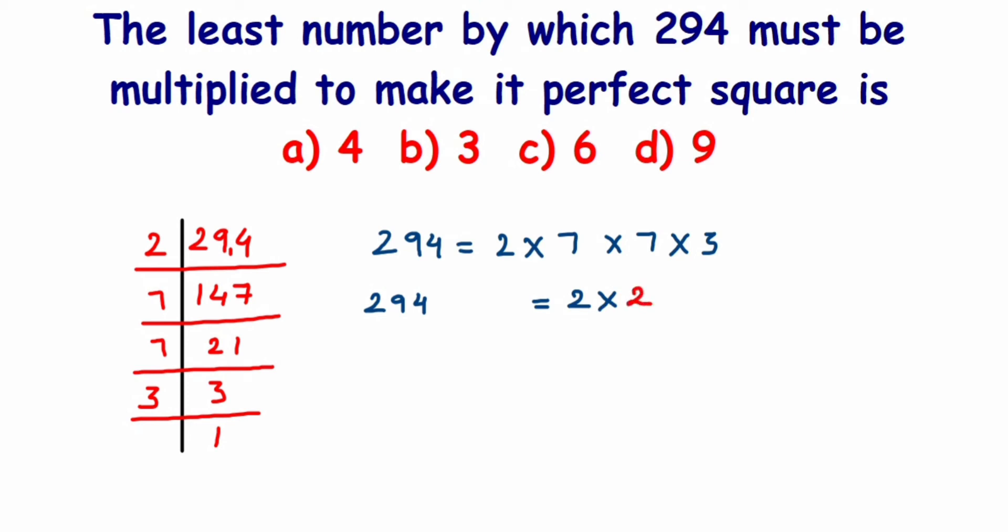Multiplied by 7, multiplied by 7, multiplied by 3, and I want to multiply with one more 3. When I'm multiplying, I'm getting one pair of 2, one pair of 7, one pair of 3. Since I multiply with 2 and 3 on the right hand side, I have to multiply on the left hand side also, that is along with 294.